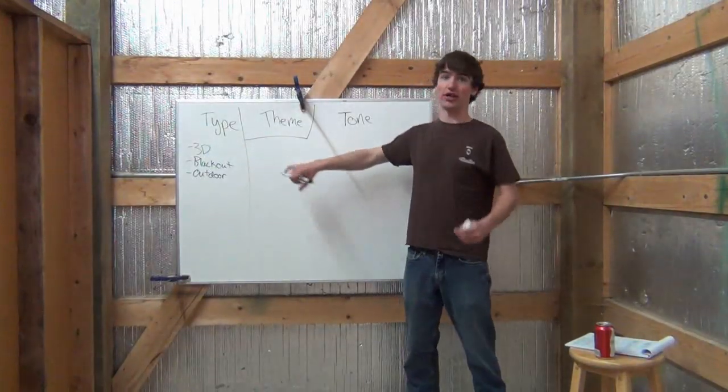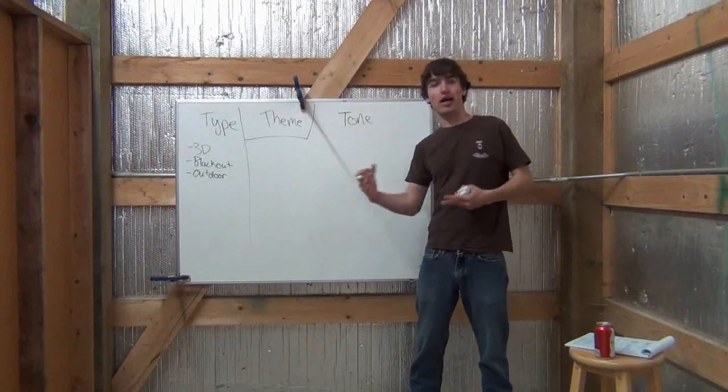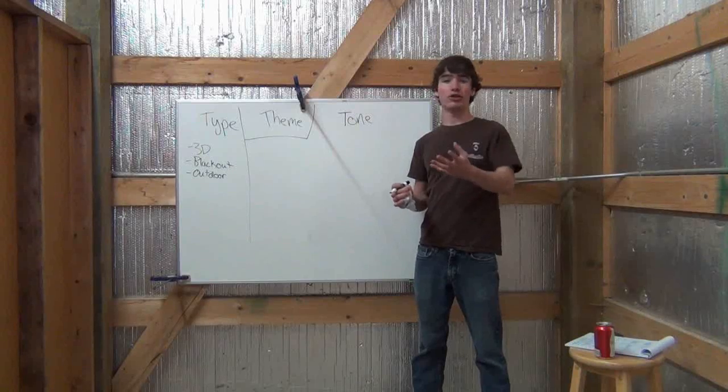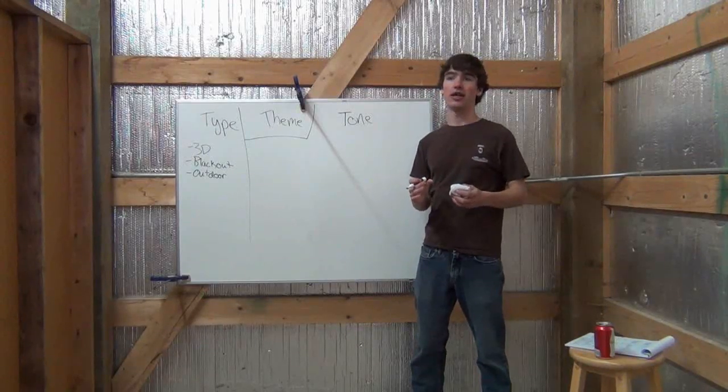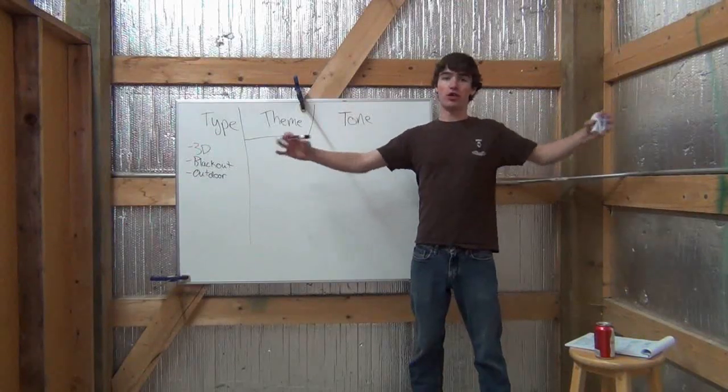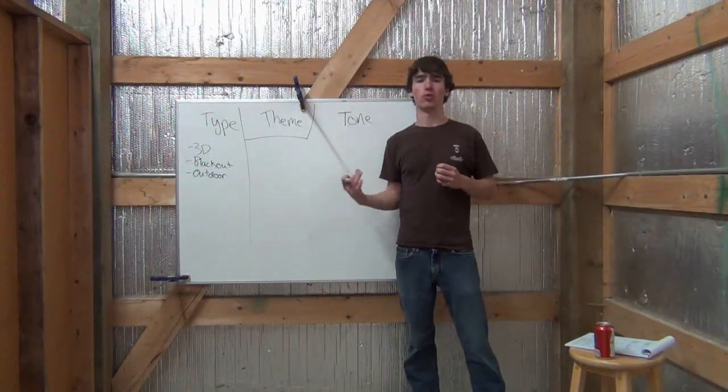I think tone can be described best along a spectrum. Type, it's your one or the other. You're an indoor haunt or you're an outdoor haunt. You're 3D or you're not. But tone, it varies along a spectrum. Like if I were to ask you, how would you identify yourself politically? You wouldn't, it's not a choose one Democrat Republican. You fall somewhere along that political spectrum of left to right. And that's how tone works in haunted houses.